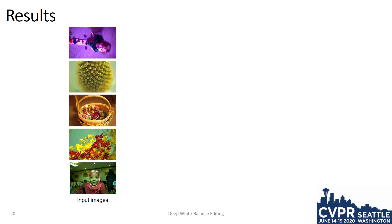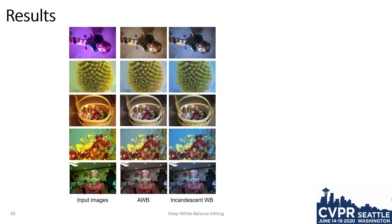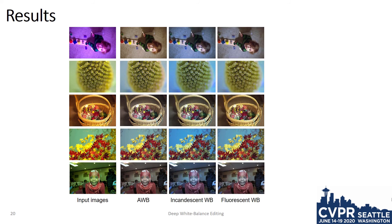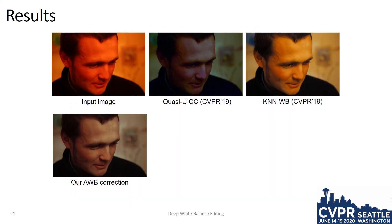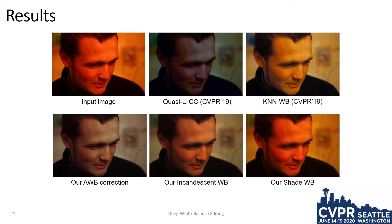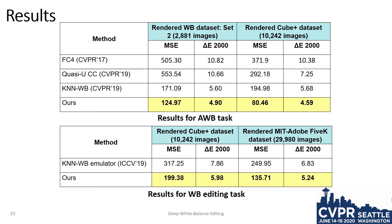Here we show several images that have been captured with the wrong white balance. We process these with our auto white balance setting, an incandescent white balance setting, a fluorescent white balance setting, and a shade setting. Here we compare our results with recent white balance correction methods from CVPR 19. We have the added benefit of being able to render our image to a different white balance setting. Here we compare our results with several image editing software packages. Quantitatively, our method performs better than prior methods for auto white balance correction and for rendering to different white balances. See our paper for details.